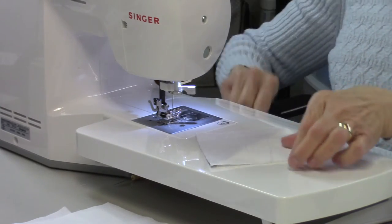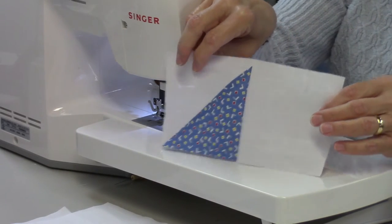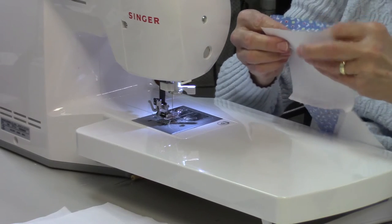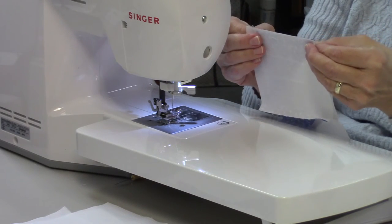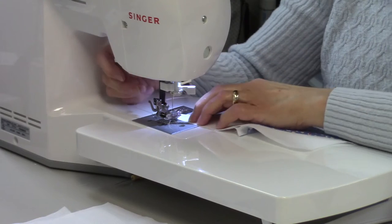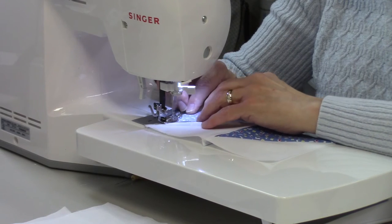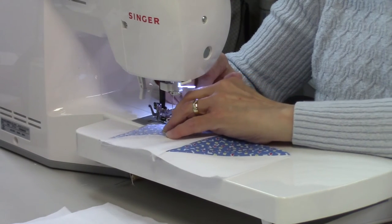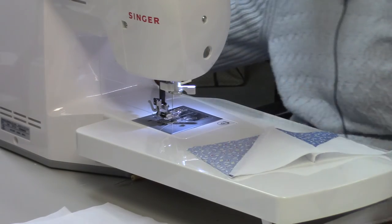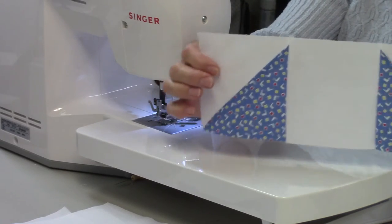I'll cut my threads, and now I'll add the third piece to it, which is the other half-square triangle. And there is row one. This is what row one looks like.